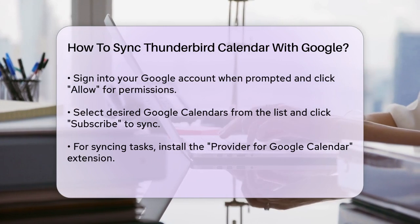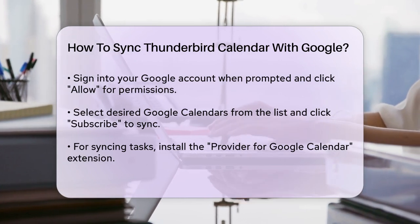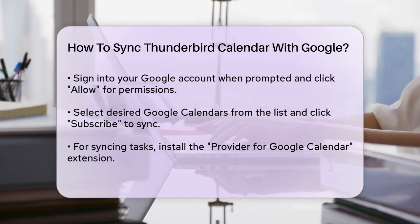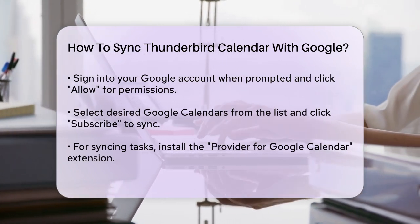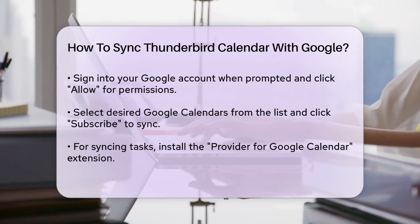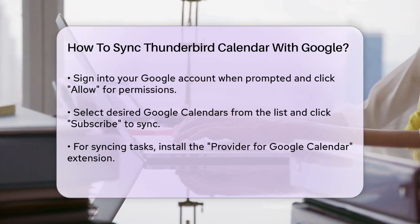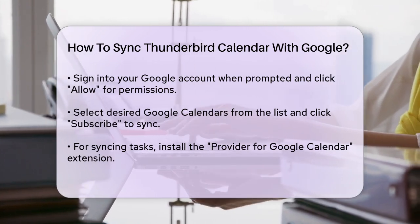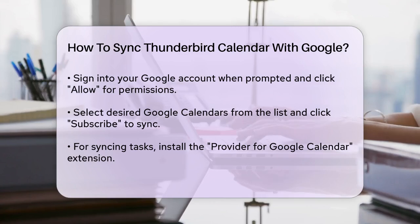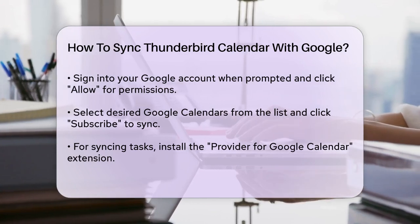To add this extension, go to Edit, Preferences, Add-ons and Themes, search for Provider for Google Calendar, and click the Add to Thunderbird button. With this extension, you can not only sync your calendars but also your tasks.